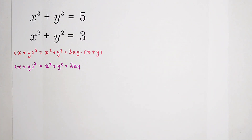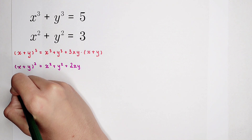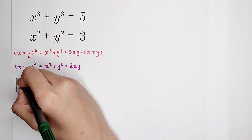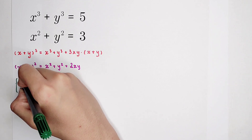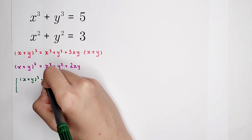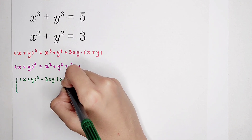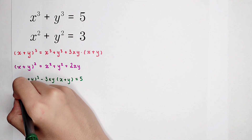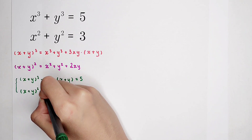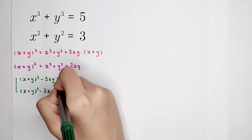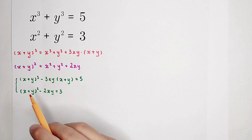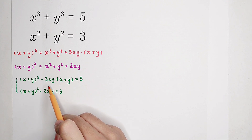Now, by using these two formulas, we can rewrite our equations. The first equation becomes: x plus y, all cubed, minus 3xy times x plus y, equals 5. The second equation becomes: x plus y, all squared, minus 2 times xy, equals 3. These two equations are now only about the sum and the product of x and y.